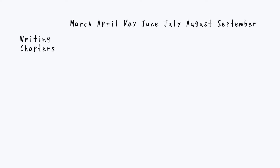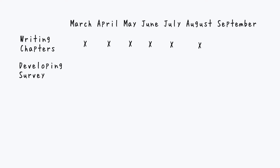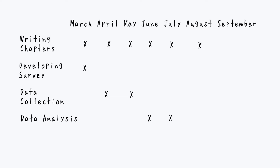I divided my time scale into six different stages. The first stage was writing chapters, from March to August. Then, because my dissertation is a research project, I designed my survey in March, collected my data from April to May, and scheduled my data analysis for June and July.